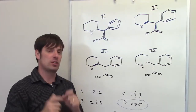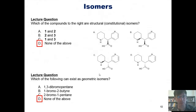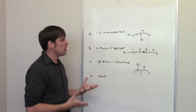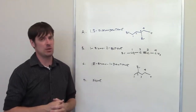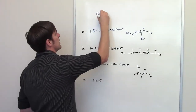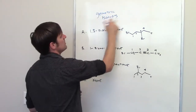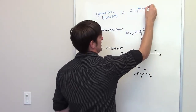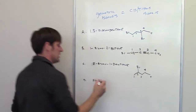In this bottom question we're asked which of the following can exist as geometric isomers. The correct answer is D, none of the above. To answer this, we need to understand what geometric isomers are. Geometric isomers is an archaic phrase meaning the same thing as cis/trans isomers.